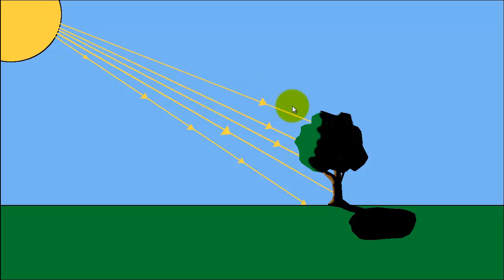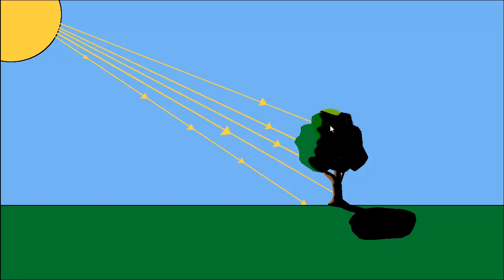These lines here represent the light coming from the sun and hitting the tree. Notice that the part facing the light, or facing the sun, is lighter, and the part at the back is darker. That's because the light does not pass through the tree — it hits the tree and it reflects off somewhere else. So the back of the tree is darker than the front of the tree, and it creates shadows.